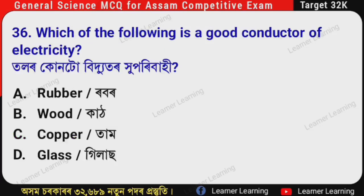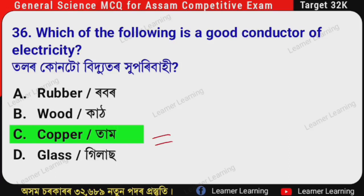Next question: Which of the following is a good conductor of electricity? (Assamese: Tonor konto vidyotor hu pori bhai?) The correct option is Option C — Copper (tam). Copper is a good conductor of electricity.